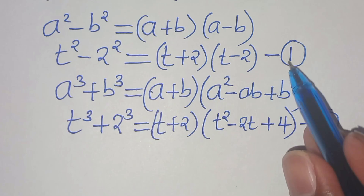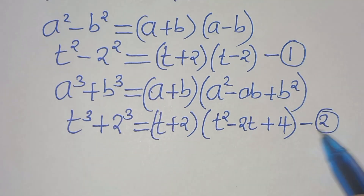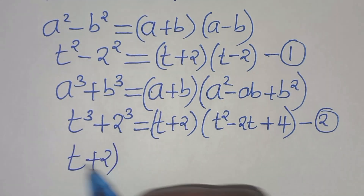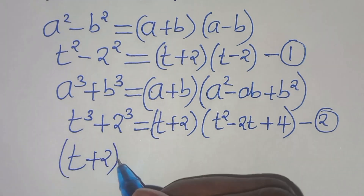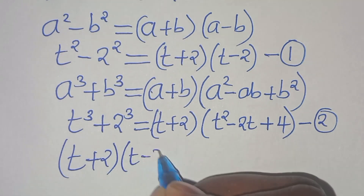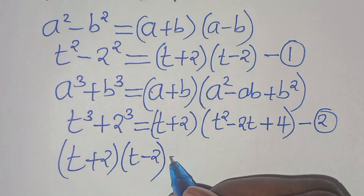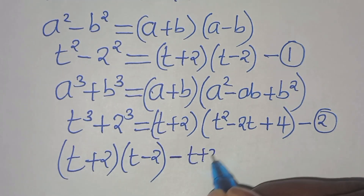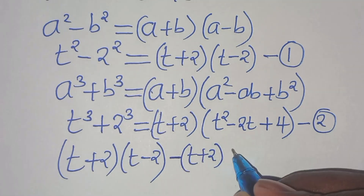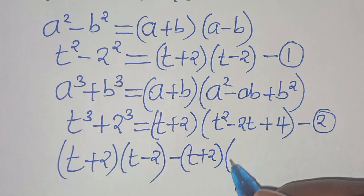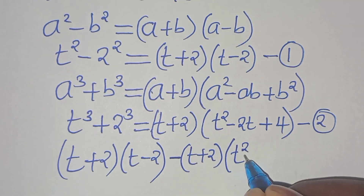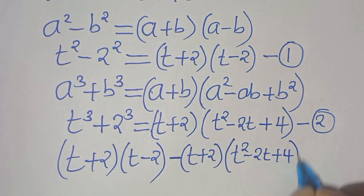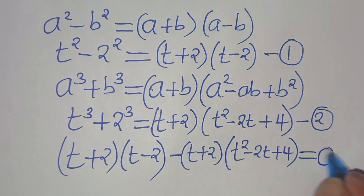Combining equation 1 and equation 2, we have t plus 2 multiplied by t minus 2, then subtract t plus 2 times t squared minus 2t plus 4, and this equals 0.